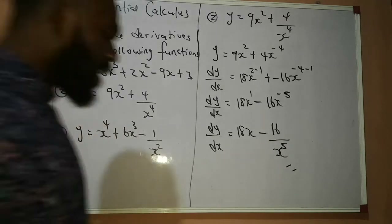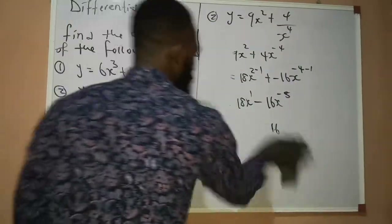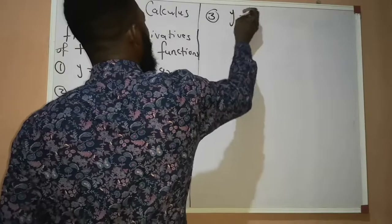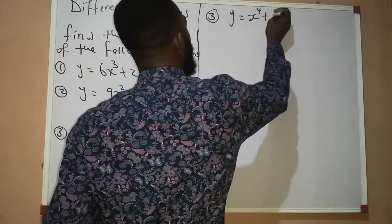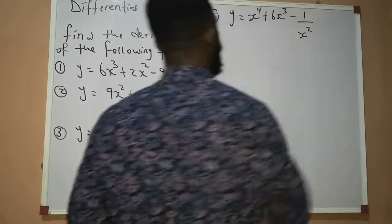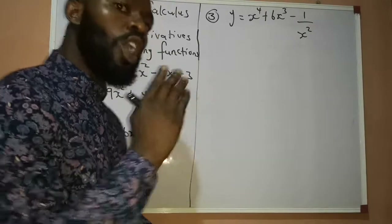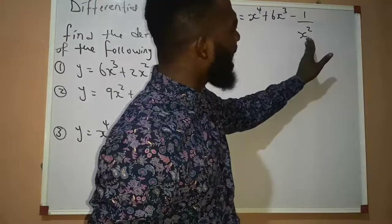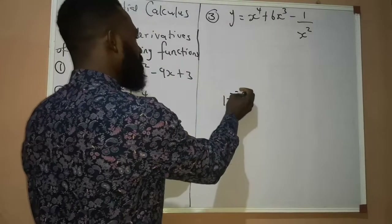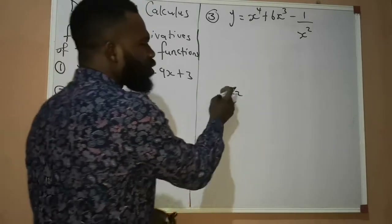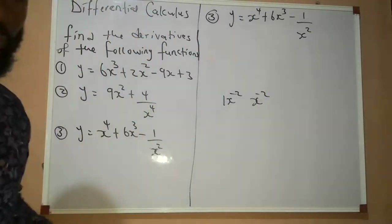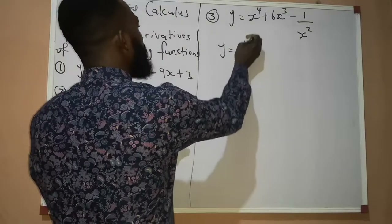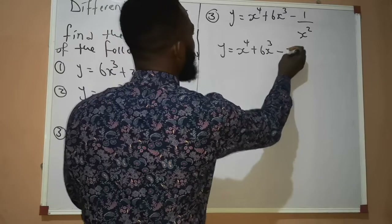That is question number 2, and the last question we have is question number 3. Question number 3 says y equal to x raised to the power of 4 plus 6x raised to the power of 3 minus 1 over x raised to the power of 2. Now if you check question number 3, you will also notice that one of the functions is a fraction. So x raised to the power of 2 — I take it up. If I take x raised to the power of 2 up, I will get x raised to the power of minus 2, giving us y equal to x raised to the power of 4 plus 6x raised to the power of 3 minus x raised to the power of minus 2.